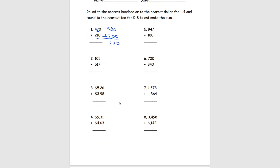Moving on to number 3, we're still rounding to the nearest hundred, but this time technically it's the nearest dollar. The same rules apply — we look at the tens place. We know that 2 rounds down, so we get $5 for the first number. For $3.98, the 9 means we round up, so $3.98 becomes $4. We add these together and get $9 as our answer for number 3.